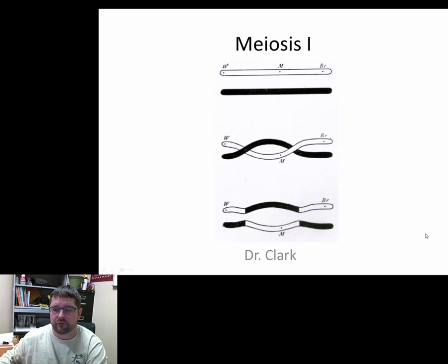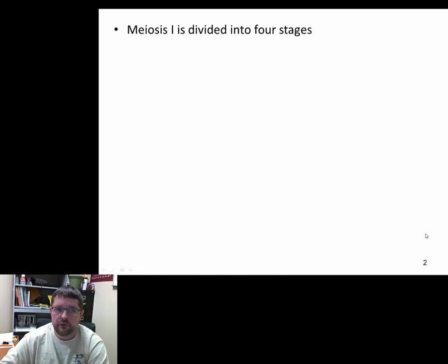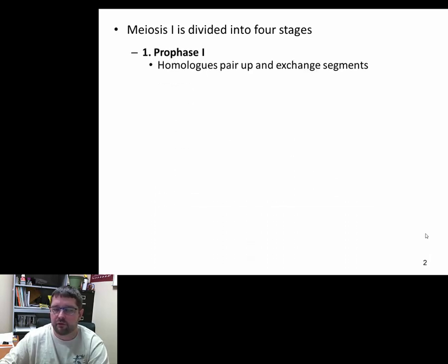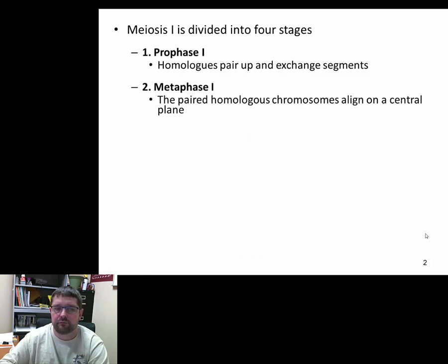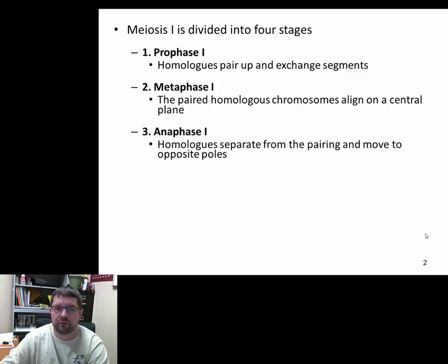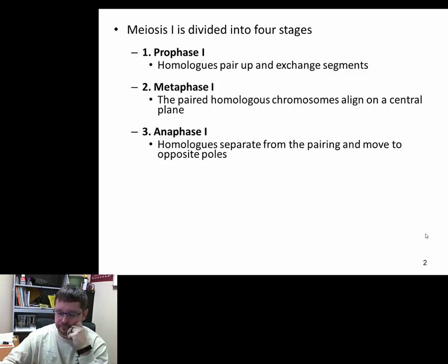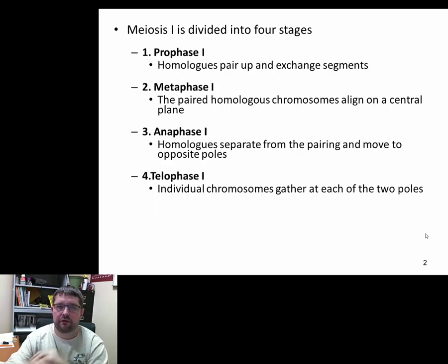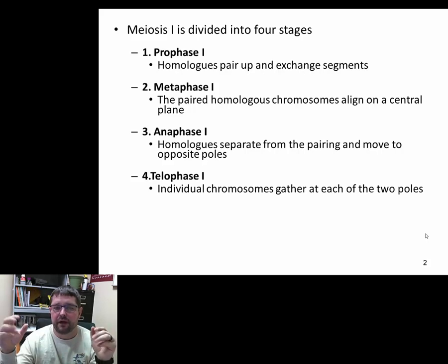Meiosis one is divided into four stages, the same kinds of stages seen in mitosis. Prophase one is where homologous pairs exchange segments through crossing over. Metaphase one is where homologous chromosomes line up on the equatorial plane, the metaphase plate. Anaphase one is where the homologues separate and move to the poles. Telophase one is where new nuclear envelopes start to form around the chromosomes at the poles.